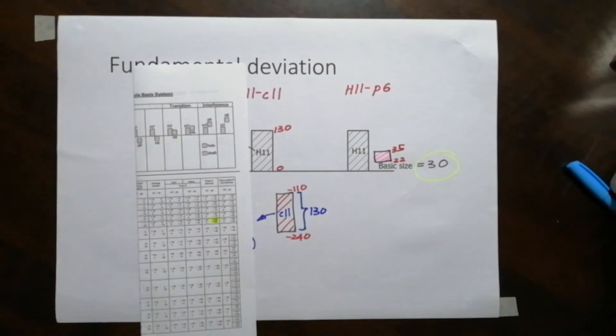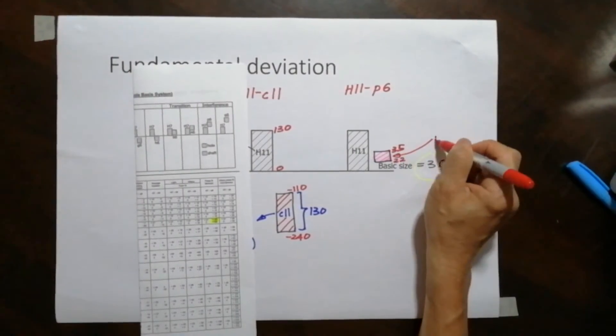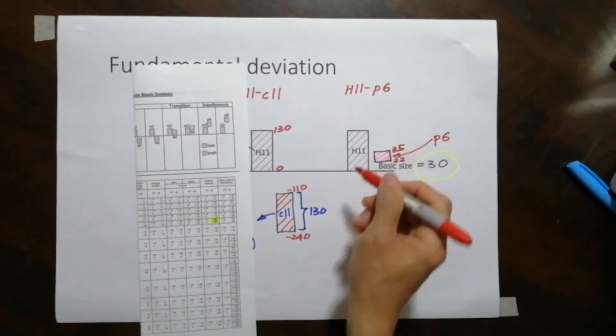In other words, you realize that the shaft, the shaft tolerance, this is P6. The shaft tolerance is within the hole tolerance.